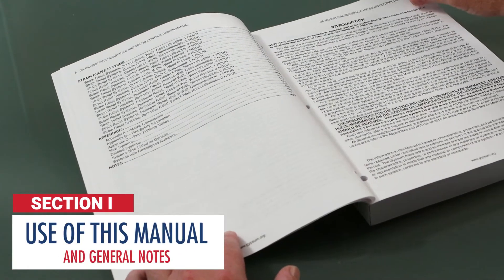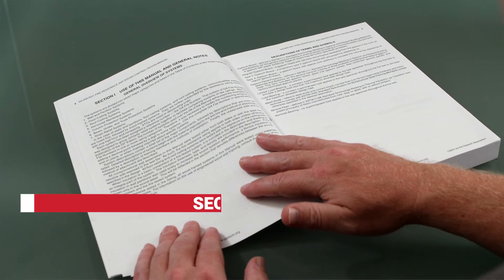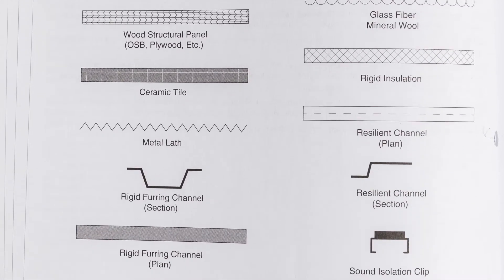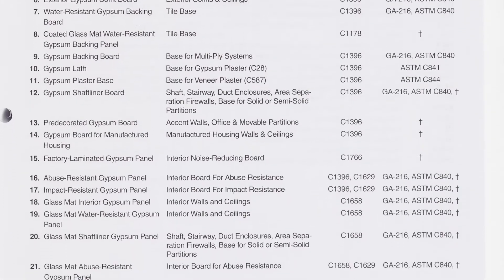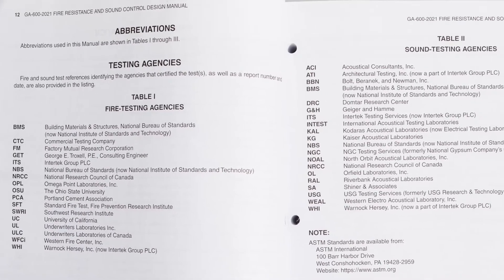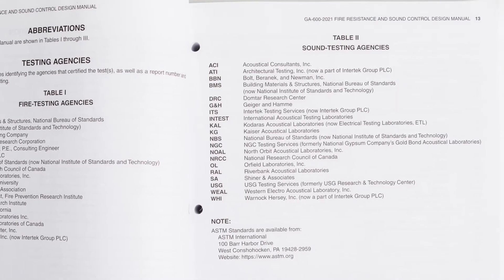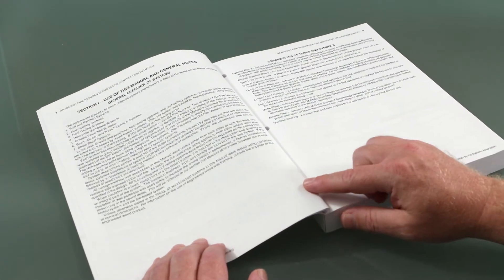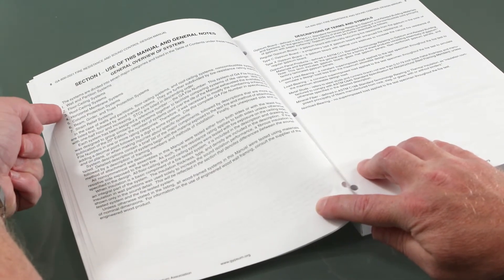Section 1, Use of This Manual and General Notes, begins on page 8. In this section you will find a general overview of terms and symbols used in system details, a product identification guide, and a list of fire testing and sound testing agencies referenced in GA600 as well as abbreviations used. Page 8 reveals how systems are divided into seven major categories listed in the table of contents.